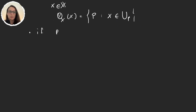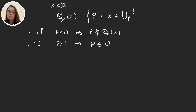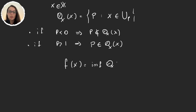So if p is smaller than 0, then p is not in Q(x), and if p is greater than 1, then p will be an element of Q(x). This tells us that the numbers we are going to focus on in Q(x) are going to be between 0 and 1. So what we will do is define the function f(x) to be the infimum of Q(x).